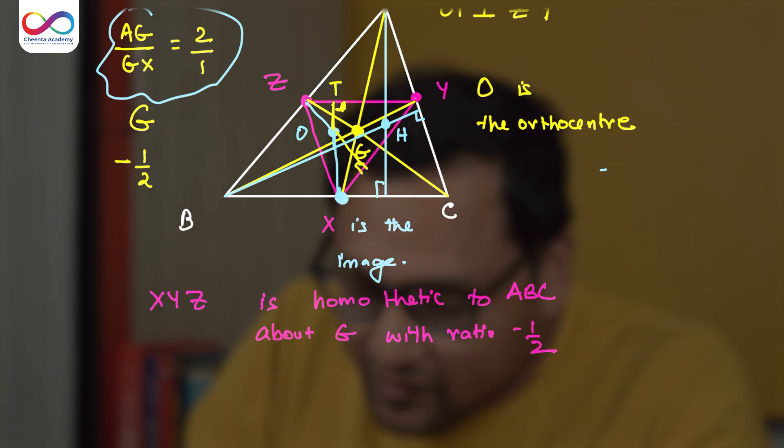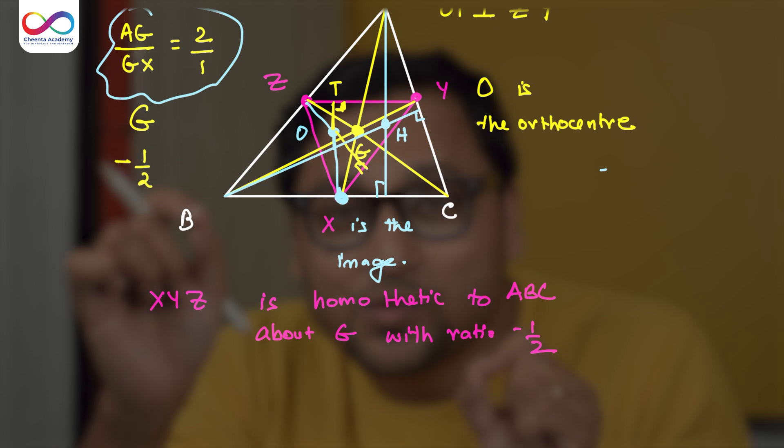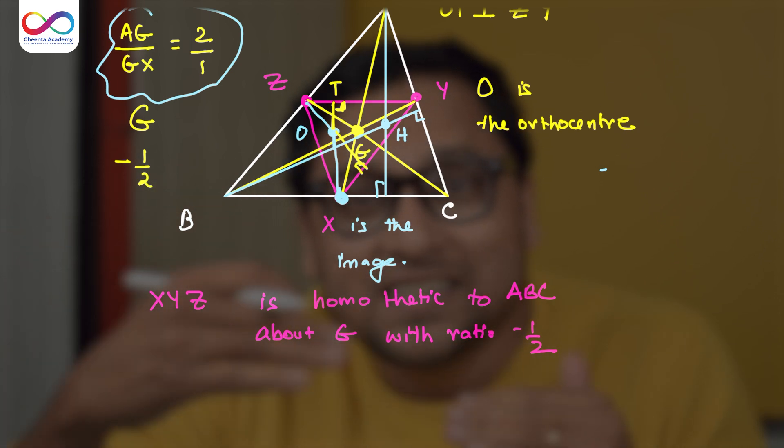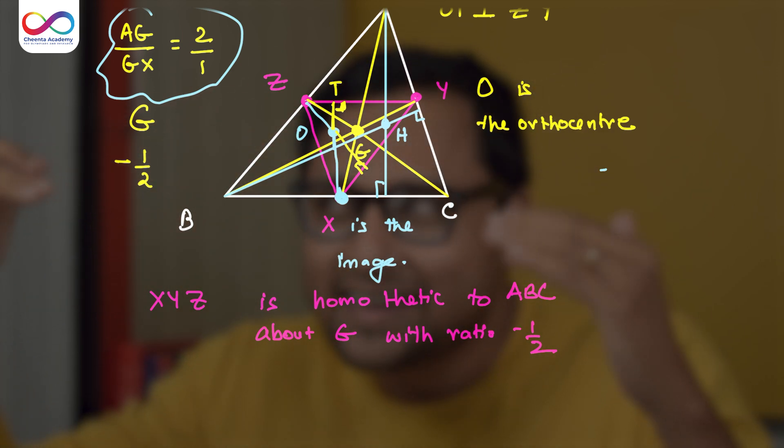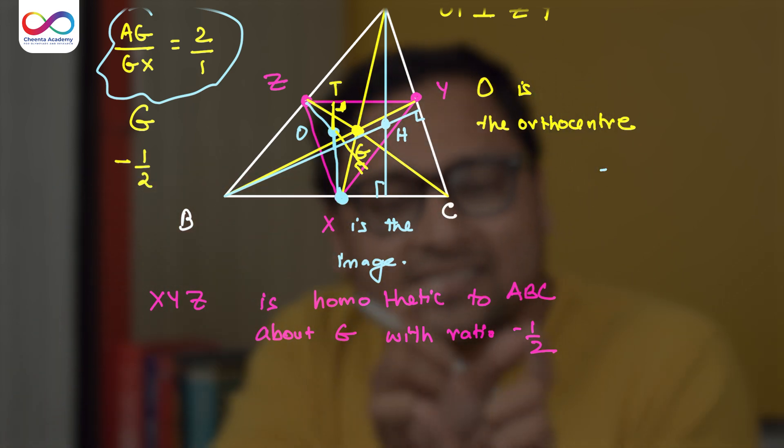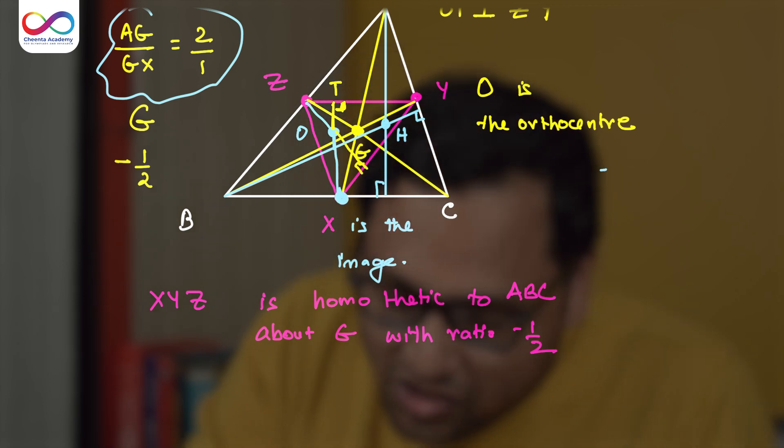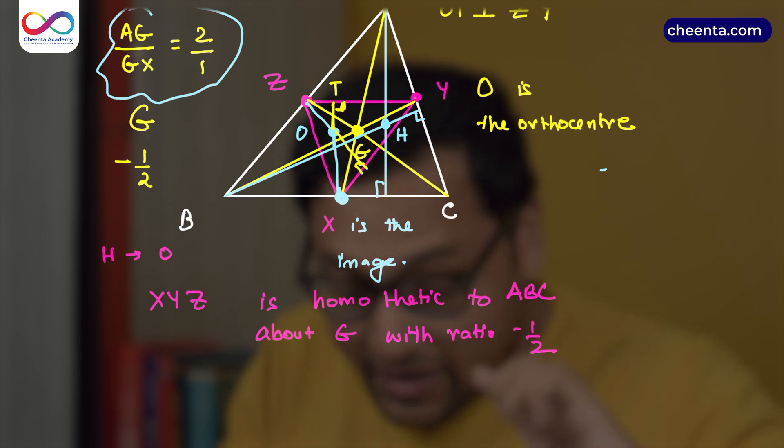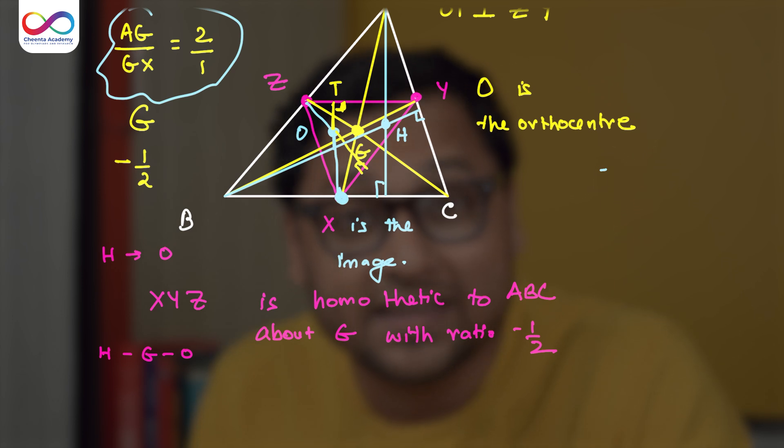In particular, H will move to O. H will move to O through G because G is the center of homothety so that ratio is minus half. H, in your mind, it should be like that. It's moving to the other side and it's half of the length on the other side. So H moves to O. So indirectly, we have proved that H, G, O are in the same straight line. They're collinear.